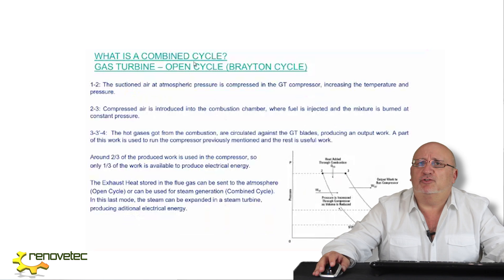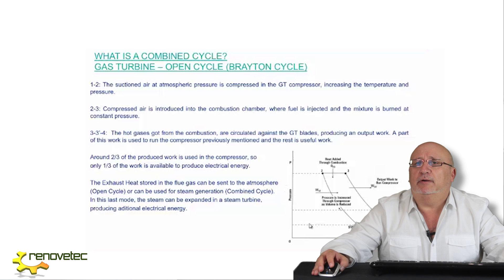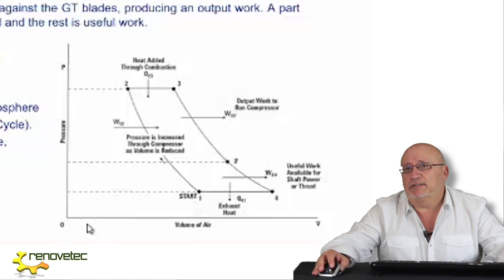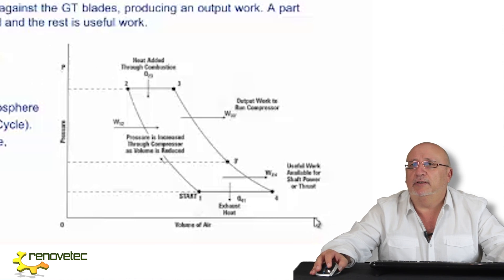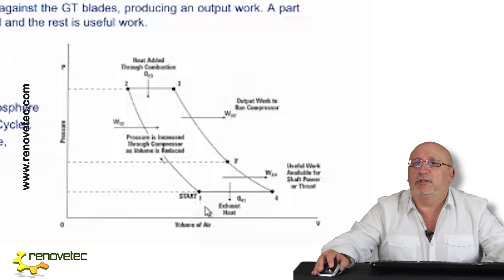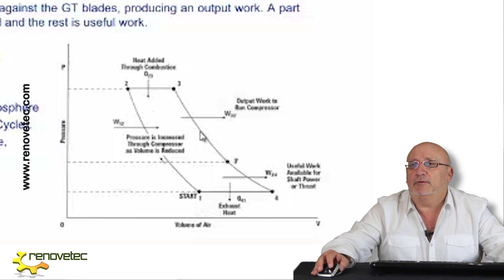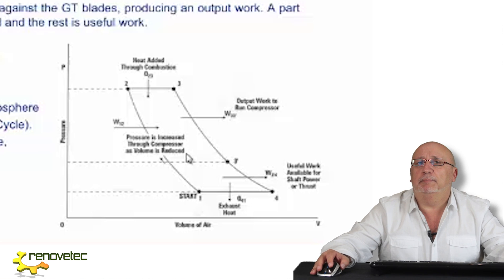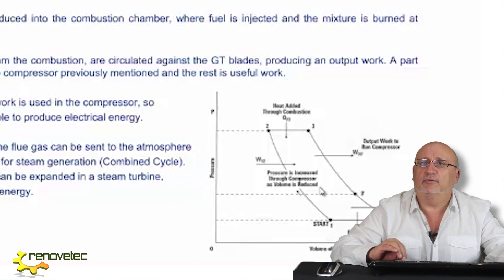The gas turbine operates in a Brayton cycle. In this diagram, we first increase the pressure against the volume — we increase the pressure while reducing the volume. After that, we increase the temperature, and then we decrease the pressure. In this cycle, we obtain mechanical energy that we transfer to a generator.